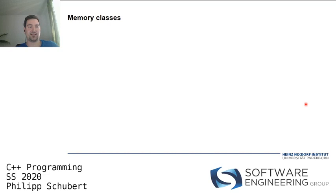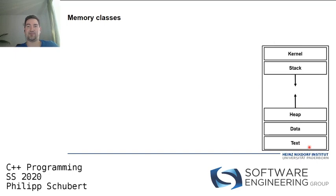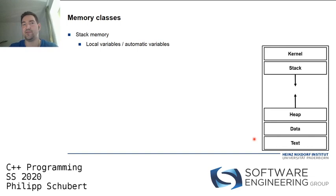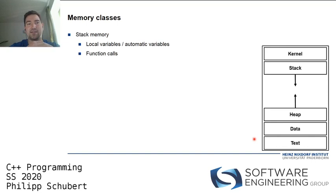Let's quickly recap what we've learned so far about memory classes. When your program starts up, it has a memory space with a kernel memory segment, a stack segment, space for the heap, and a data and text segment. Local variables — also called automatic variables — are automatically cleaned up, which is why they're called automatic. These go onto the stack segment.